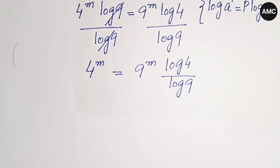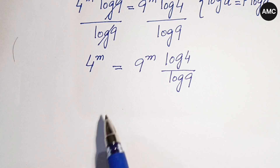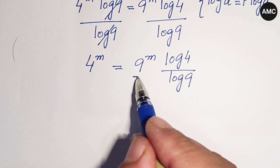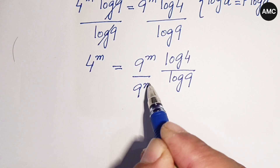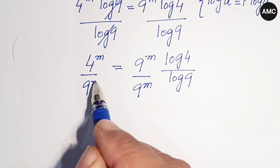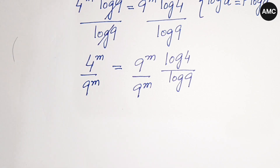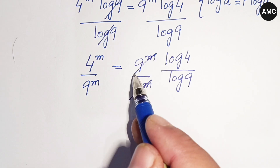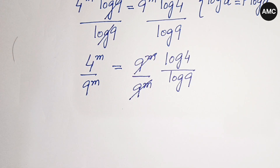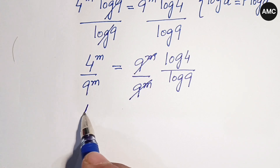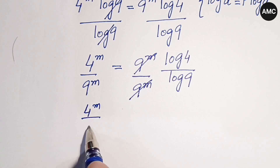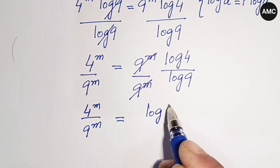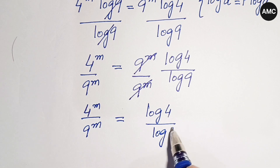Our next step is to divide both sides by 9 to the power m. So 9 to the power m is cancelled out with 9 to the power m, and we get 4 to the power m over 9 to the power m is equal to log 4 over log 9.